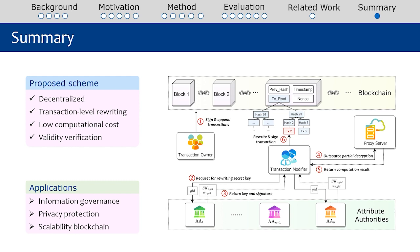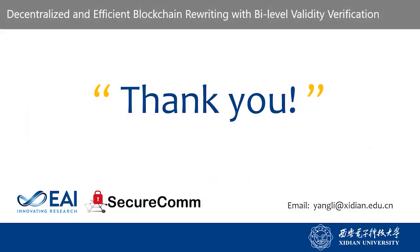In summary, we proposed a scheme of decentralized and efficient blockchain rewriting with bi-level validity verification. The scheme performs decentralized and transaction-level rewriting on the blockchain with low computational cost. Additionally, we provide a mechanism of validity verification for checking transactions and rewriting secret keys. These properties make our solution have considerable application potential in many fields, such as information governance, privacy protection, and scalable blockchain. Our presentation is finished. Thanks for listening.